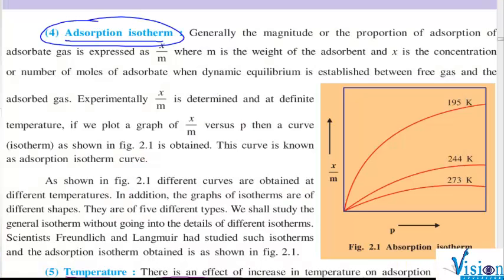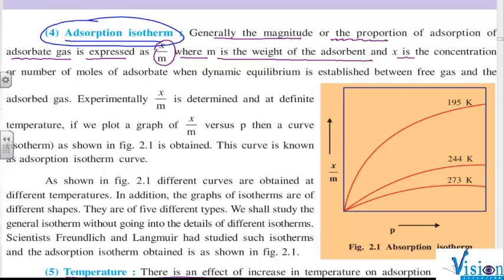We will continue further from your book. So generally, the magnitude or the proportion of adsorption of adsorbate gas is expressed as x by m, where m is the weight of the adsorbent and x is the concentration or number of moles of adsorbate when dynamic equilibrium is established.